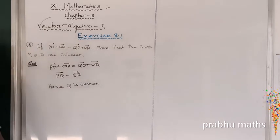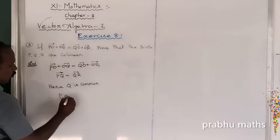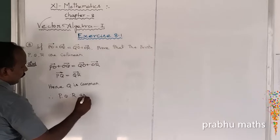So PQ is equal to QR, therefore P, Q, R are collinear.